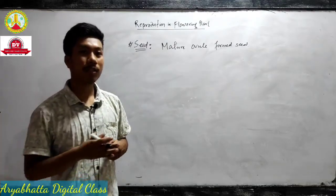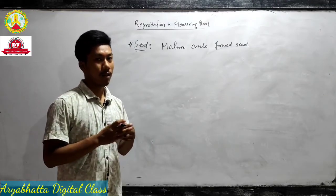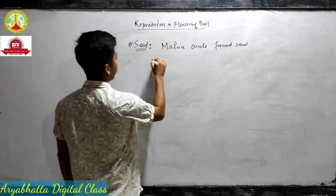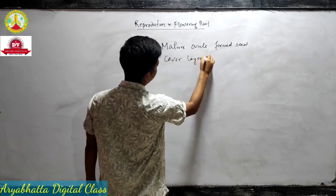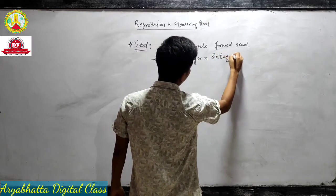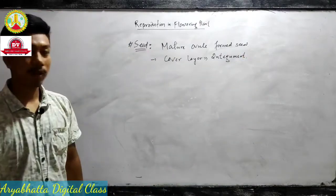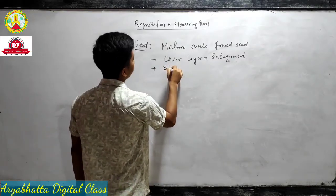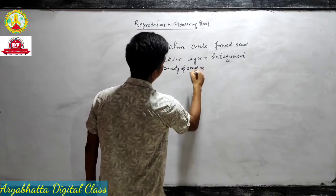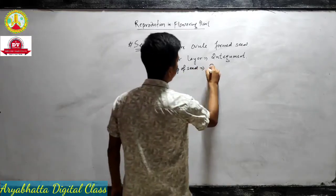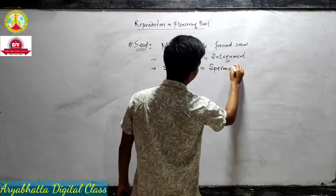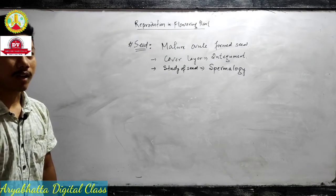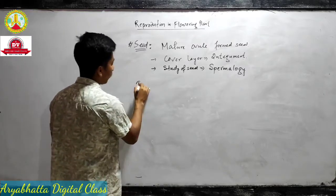This topic we have already discussed in the first year chapter on morphology of flowering plants, so we will just do a revision here. The seed has a cover layer known as integument — we have already seen the integument structure. The study of seed is known as spermology.